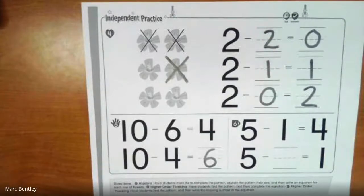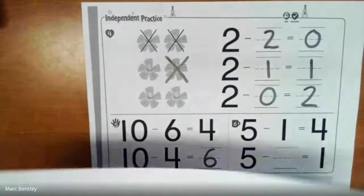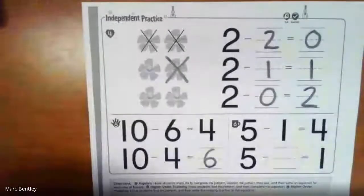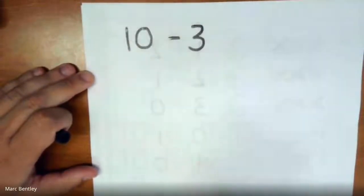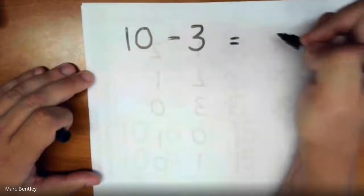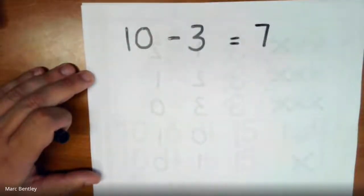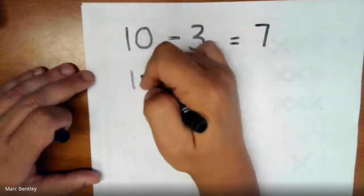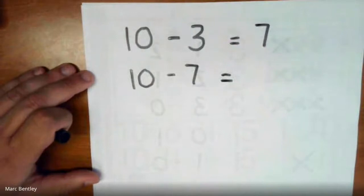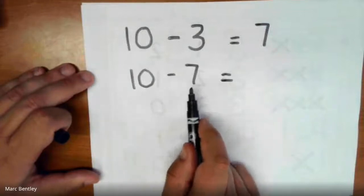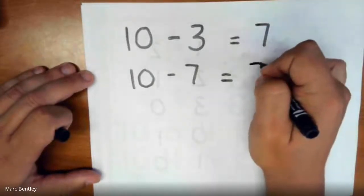We do another example. So here, if I have 10 minus 3, this equals 7. So what do you think 10 minus 7 will equal? So if 10 minus 3 equals 7, that means that 10 minus 7 must equal 3.